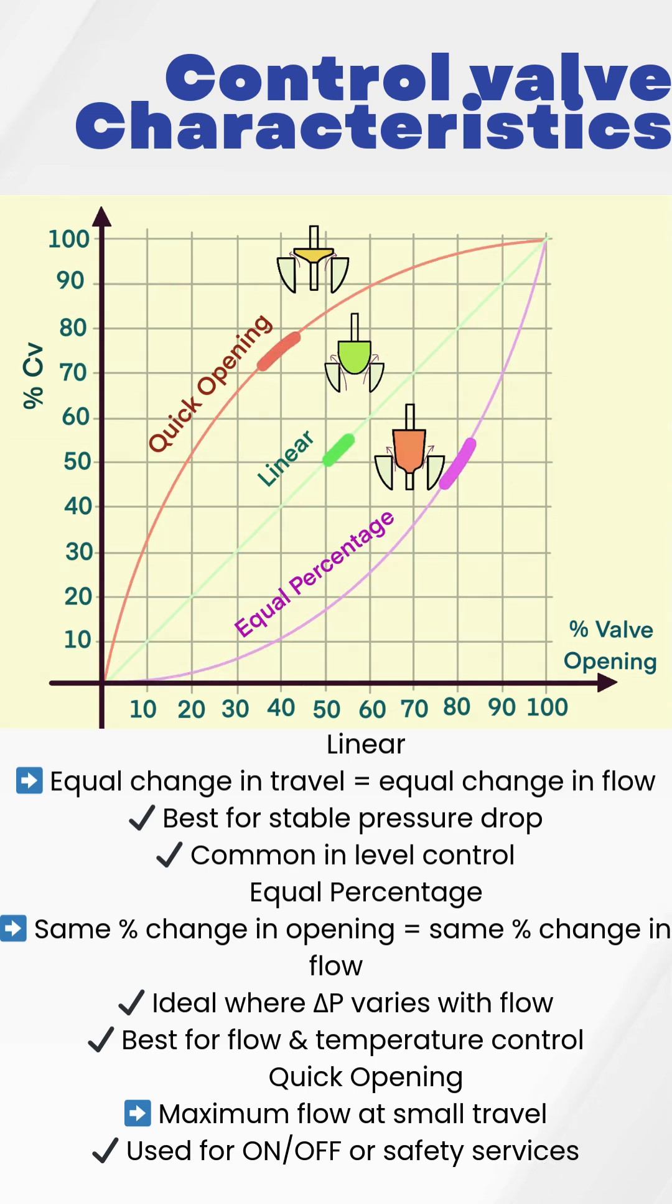If pressure drop is constant and control range is narrow, choose linear. For shutdown or interlock services, quick opening is the right option.